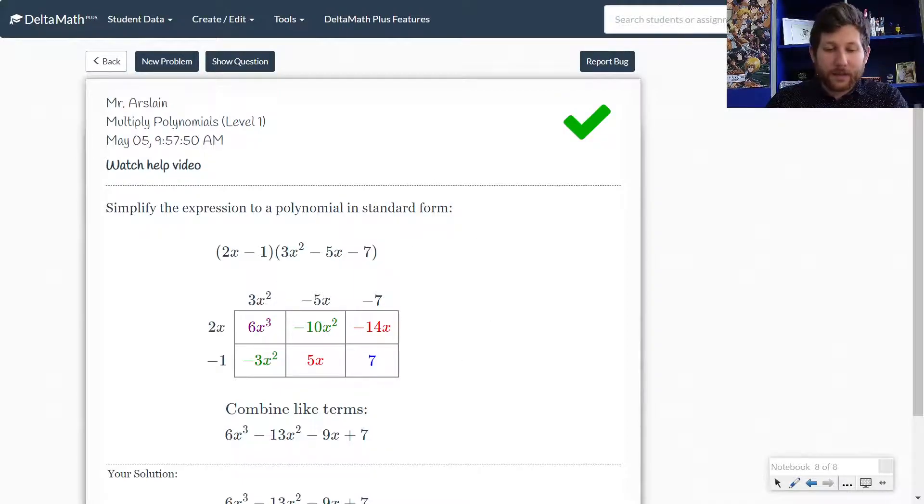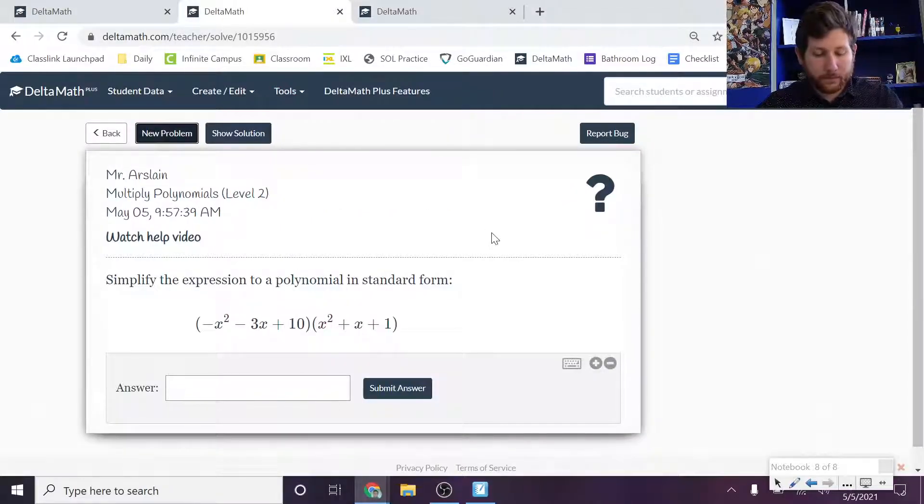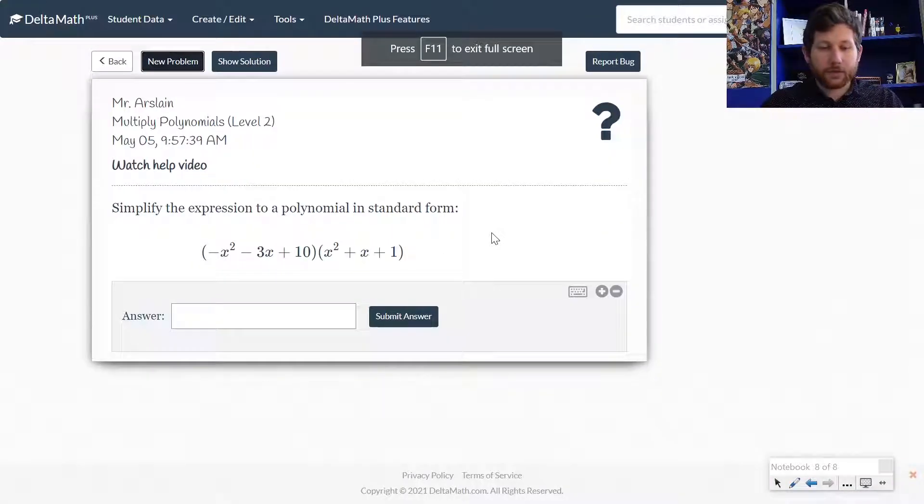or that we jump the intermediate stuff and just jump straight to the end and end up making mistakes that way. So this is a good way. If this is the method that you want to use, I would encourage you to use that. So let's look at level 2.